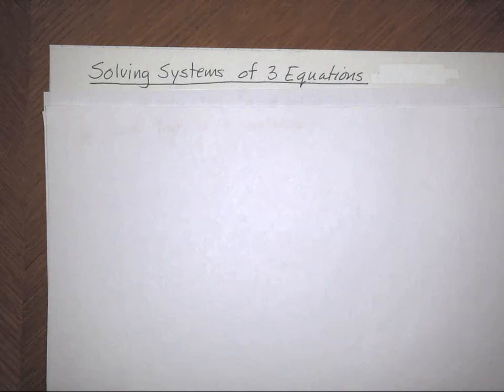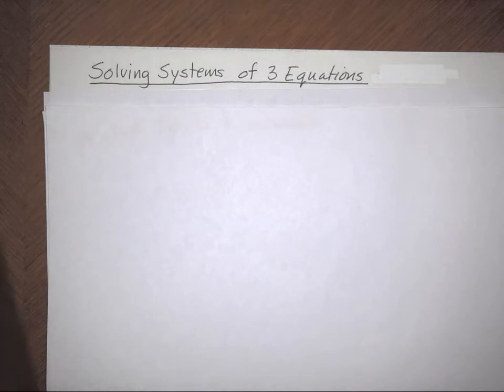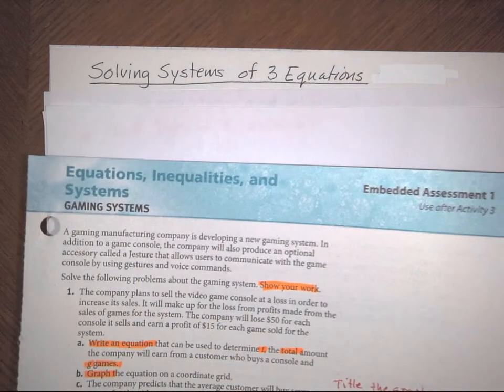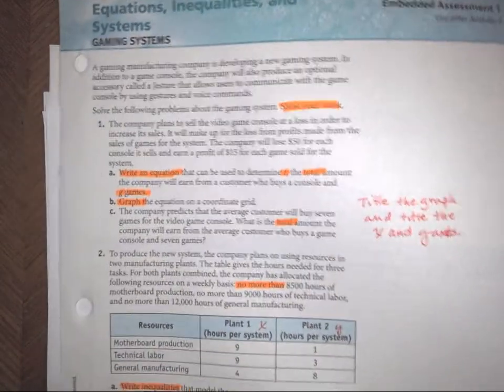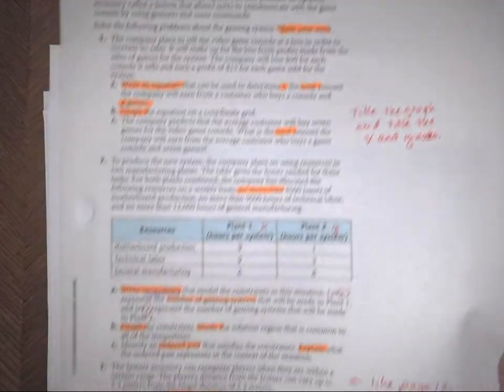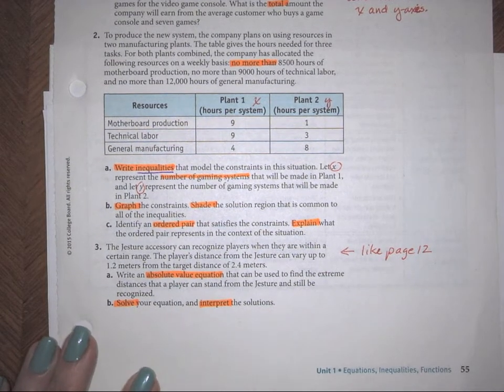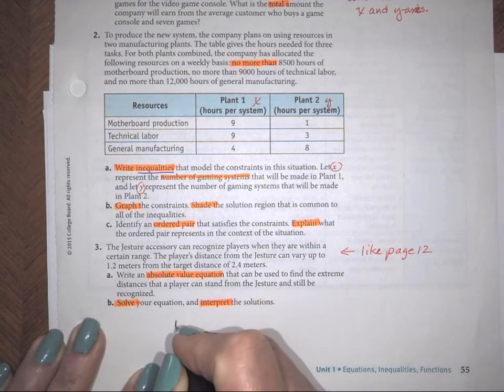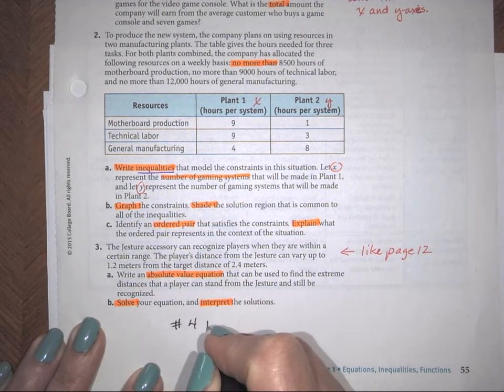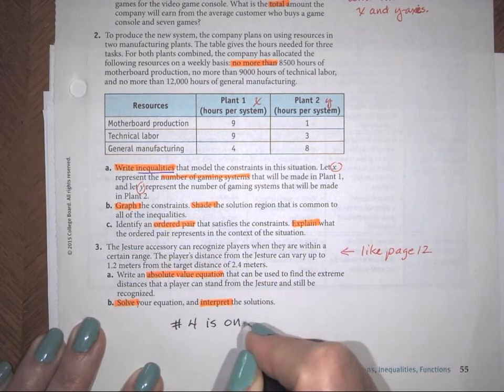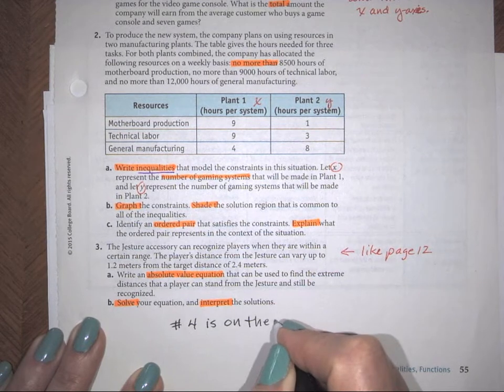We're going to be solving systems of three equations, but before we get started, there's something I need to point out in your book on page 55 on the Embedded Assessment. I honestly don't remember if I pointed this out, and I don't think I did. We went through and talked about several things, and if you turn to page 55, I want you to write that number four is on the next page.